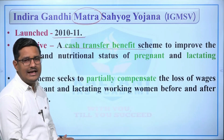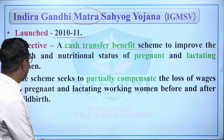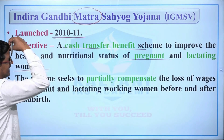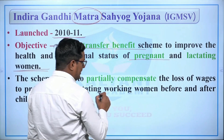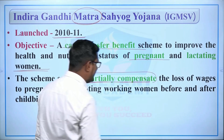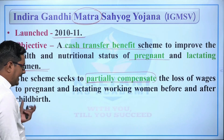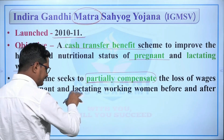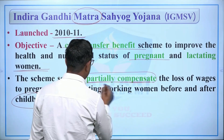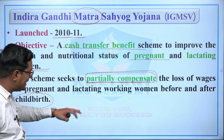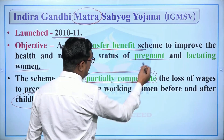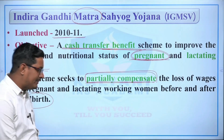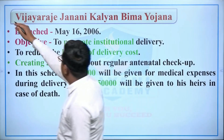The Indira Gandhi Matrisahyog Yojana is a cash transfer benefit scheme to improve the health and nutritional status of pregnant and lactating women. It partially compensates for the wage loss of pregnant and lactating women before and after childbirth, providing financial assistance so that pregnant women can improve their health and children's health can also improve.